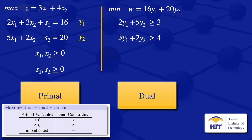Next we look at the slack variable s1. Its coefficient is 1 and it appears only in the first equation, so we have 1 times y1, which is y1. Since s1 is greater than or equals to 0, the dual constraint is greater than or equals to the coefficient of s1 in the objective function. Since s1 does not appear in the objective function, its coefficient is 0, giving us y1 greater than or equals to 0.